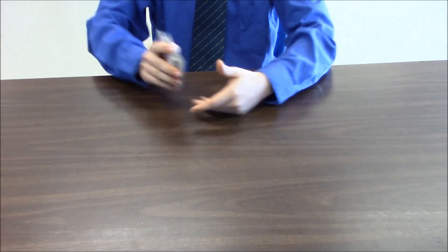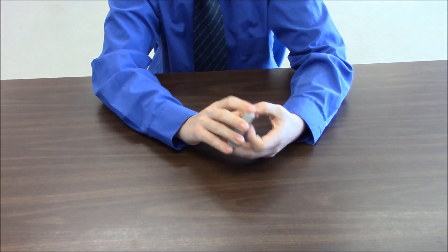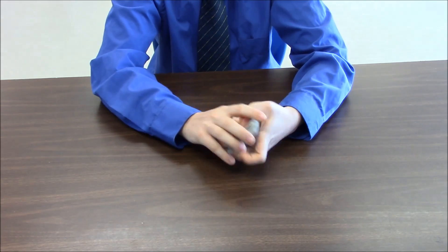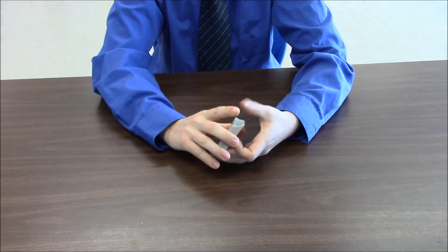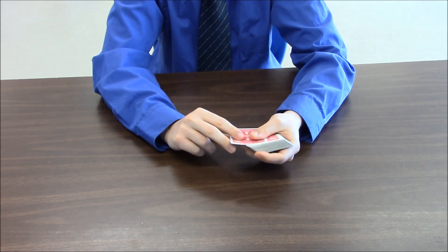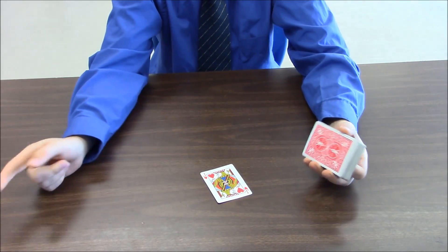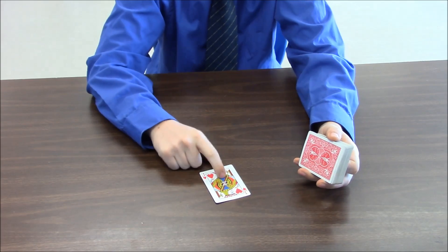So when a spade is on the bottom, I know a heart is on top, and this should be the jack of hearts, because eight plus three is eleven. Eleven equals the jack.